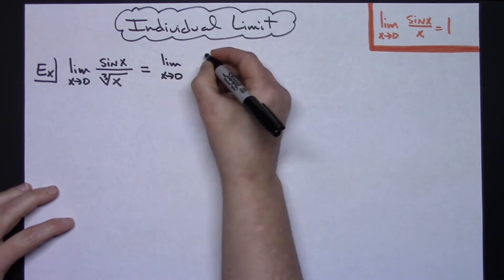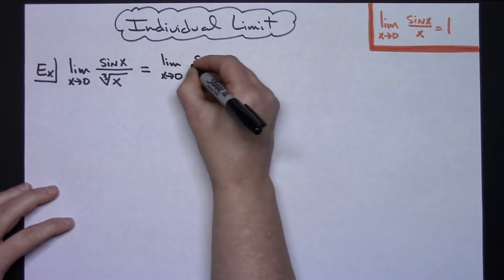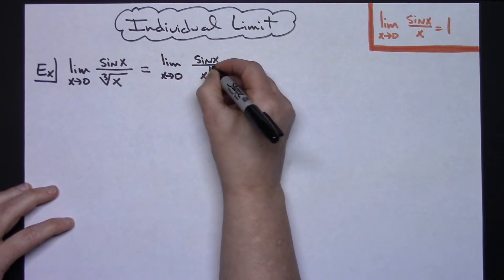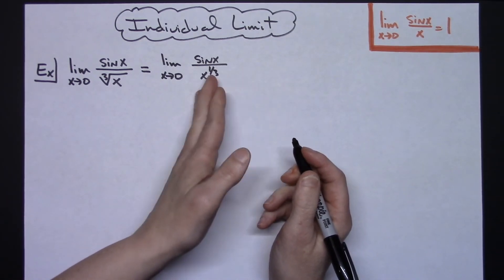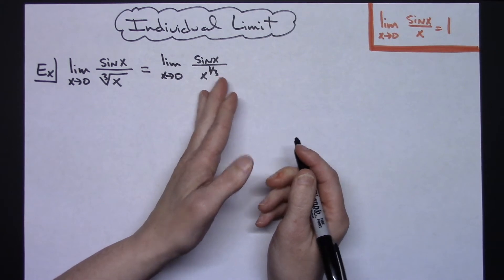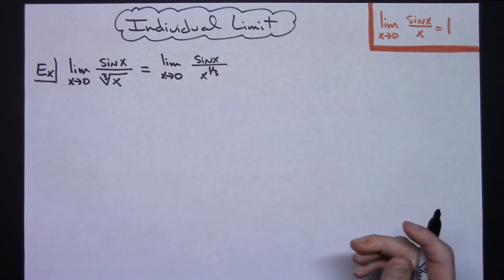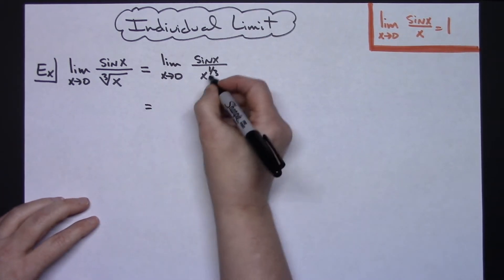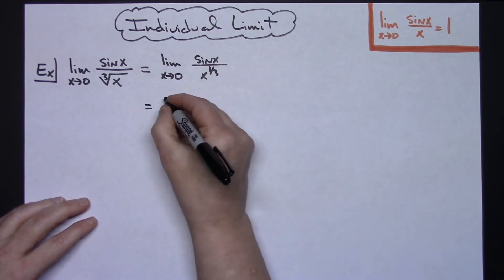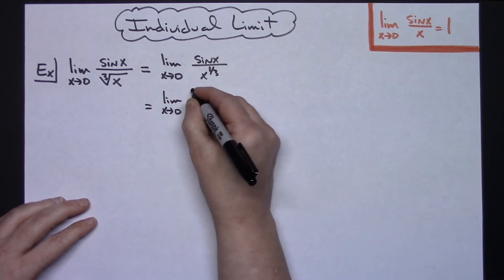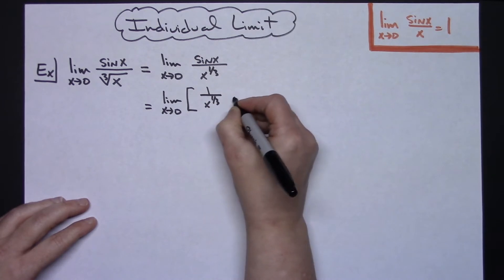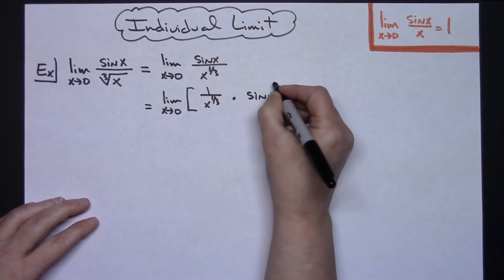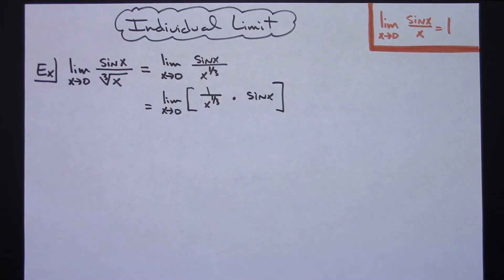I can separate this rational fraction into two fractions being multiplied together. Let's do that to get sine x by itself. The limit as x approaches zero of one over x to the one-third times sine x, just separating it like that for now.